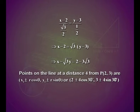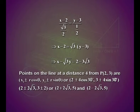Find the coordinates of two points on the line at a distance 4 from P on either side. The points are (x₁ ± r cos θ, y₁ ± r sin θ), that is (2 ± 4 cos 30°, 3 ± 4 sin 30°), which simplifies to (2 ± 2√3, 3 ± 2). So the two points are (2 + 2√3, 5) and (2 minus 2√3, 5).